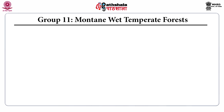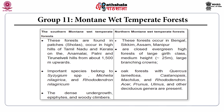Group 11, the mountain wet temperate forests: the southern mountain wet temperate forests are found in patches in high hills of Tamil Nadu and Kerala on Annamalai, Palani, and Palni Valley hills at about 1500 meters and upwards. Important species belong to Syzygium, Michelia nilagirica, and Rhododendron nilagirica. There is dense undergrowth with presence of epiphytes and woody climbers.